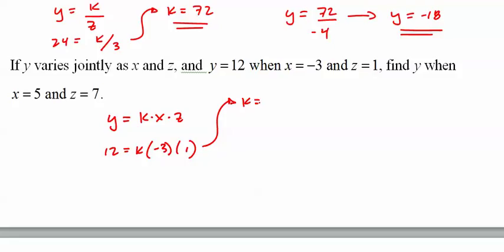Find Y when X equals 5 and Z equals 7. Y equals negative 140.